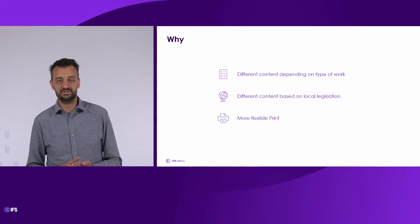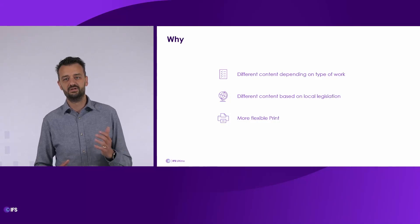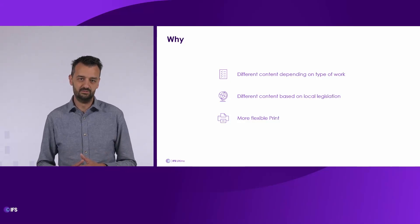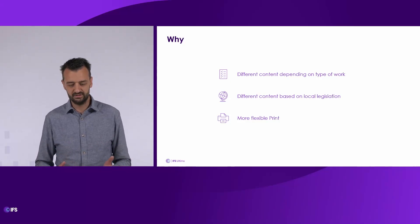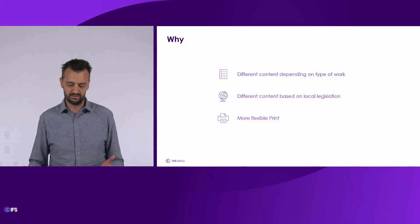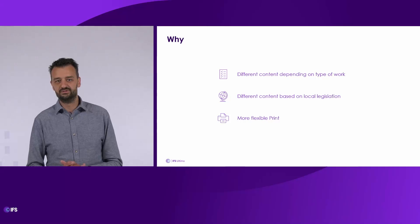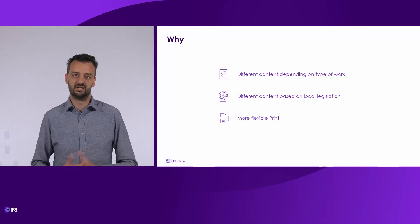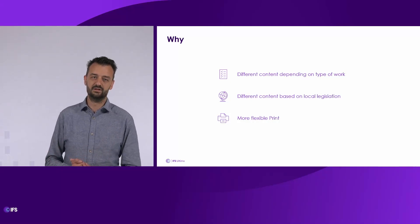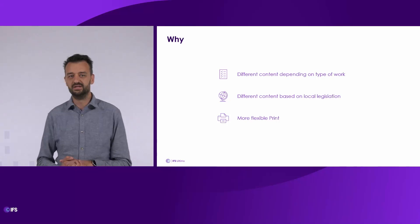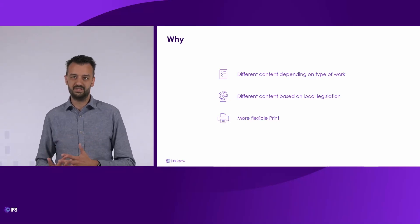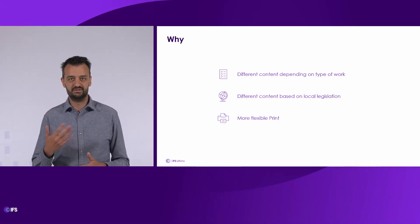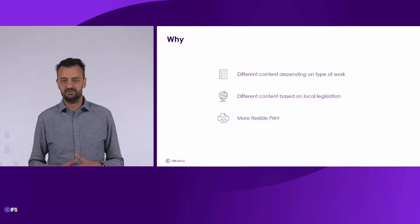The second topic is a possibility to differentiate the content of your permit based upon the location where you're working. Because sometimes when you're operating in multiple countries, there's specific legislation for one country that's not applicable for another country. So there you want to be able to tailor the permit to the specific situation you are in and to the specific local legislation you may encounter. The last topic is the flexibility of the permit print — we want to offer some possibilities to make it more flexible with extra options and settings.